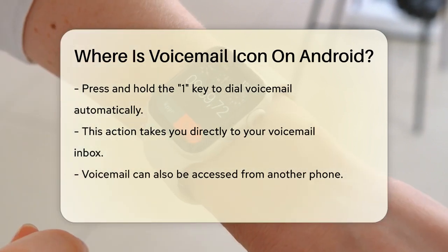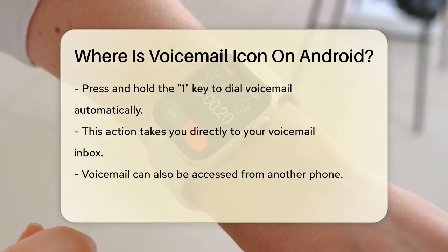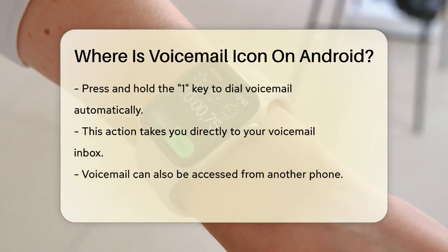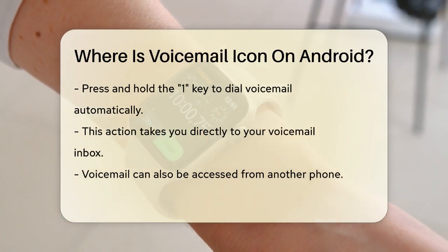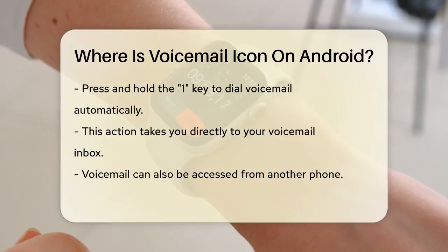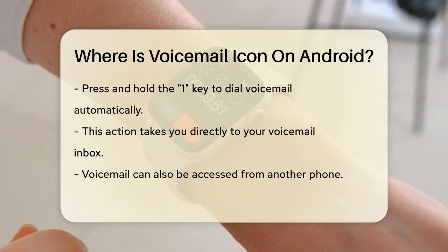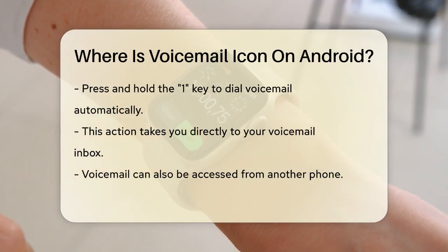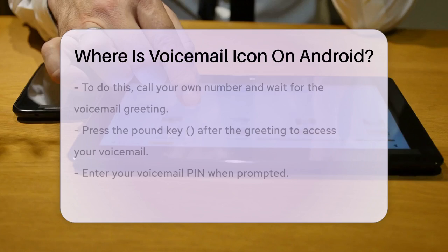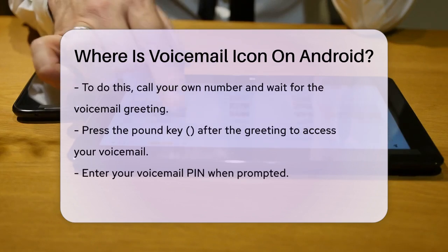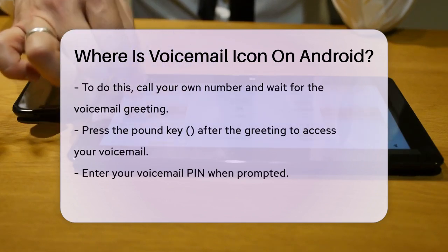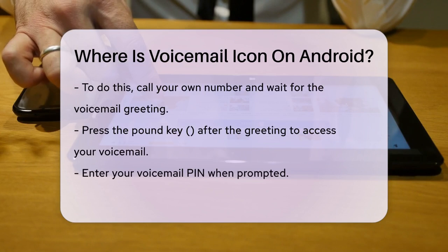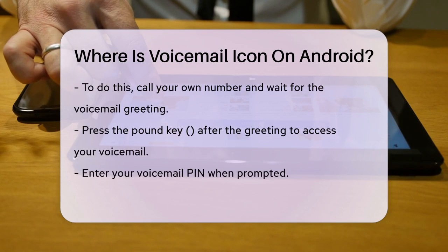If you're not near your phone or if the battery is dead, you can also access your voicemail from another phone. Simply call your own phone number, wait for the voicemail greeting to start, and then press the pound key. You'll be prompted to enter your voicemail PIN, and then you'll have access to your voicemail.